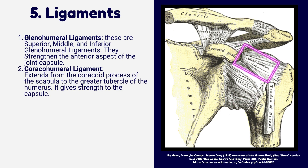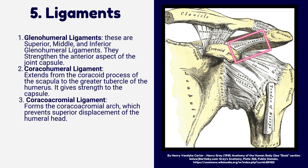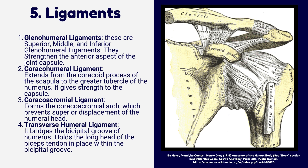The coracohumeral ligament extends from the coracoid process of the scapula to the greater tubercle of the humerus, giving strength to the capsule. The coracoacromial ligament forms the coracoacromial arch, which prevents superior displacement of the humeral head. The transverse humeral ligament bridges the bicipital groove of the humerus and holds the long head of the biceps tendon in place within the bicipital groove.